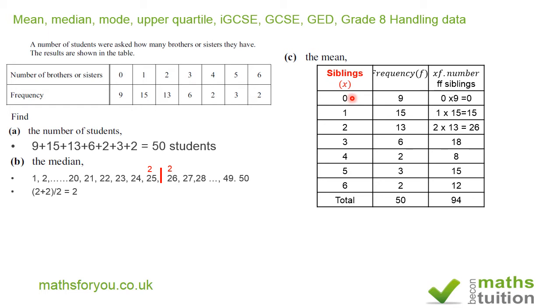So for instance, for the category with no siblings at all, we've got zero siblings. Zero times 9 is zero. The category with only one sibling, we've got 15 siblings. So 26 and 18 and then 8 and then 15 and then 12 and then 24, sorry and then 12. If you add all those up, you should get 94.